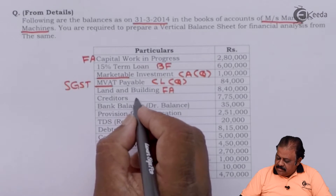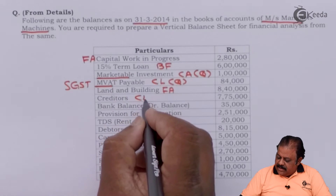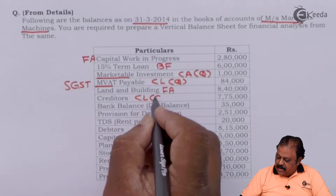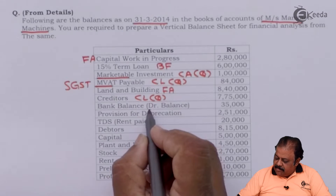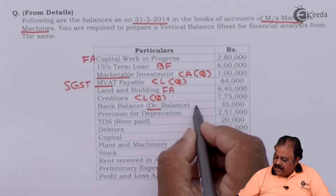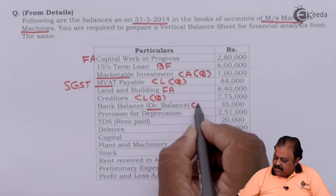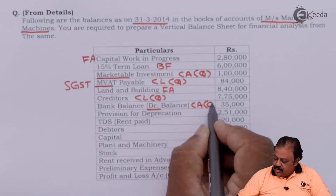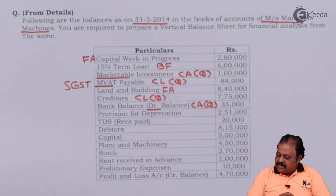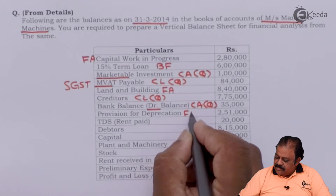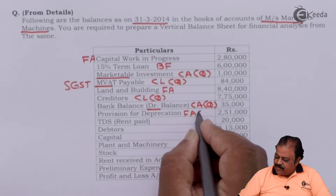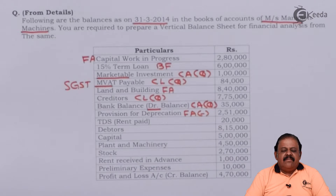Creditors are a current liability. Bank balance with a debit balance is a positive balance, making it a current asset and a quick current asset. Provision for depreciation will be deducted from fixed assets to arrive at the net block.